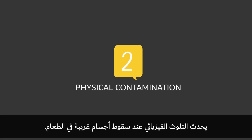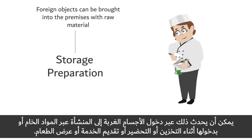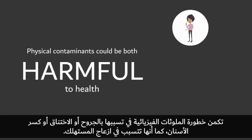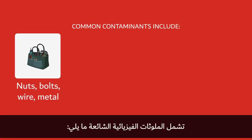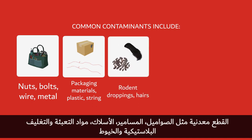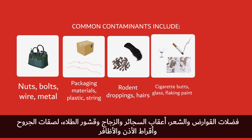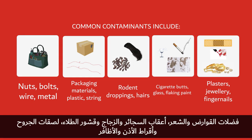2. Physical contamination occurs when foreign objects fall into the food. Foreign objects can be brought into the premises with raw materials or introduced during storage, preparation, service, or display. Physical contaminants could be both harmful to health by causing cuts, choking, and broken teeth, and objectionable by being unpleasant for the consumer. Common contaminants include nuts, bolts, wire, metal, packaging materials, plastics, string, rodent droppings, hairs, cigarette butts, glass, flaking paint, plasters, earrings, and fingernails.